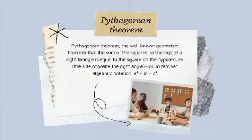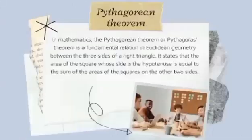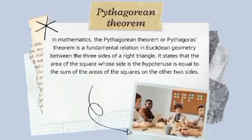What is the Pythagorean Theorem? The Pythagorean Theorem is the well-known geometric theorem that the sum of the squares on the legs of a right triangle is equal to the square on the hypotenuse — the side opposite the right angle — or in familiar algebraic notation: a squared plus b squared is equal to c squared, or c squared is equal to a squared plus b squared. In mathematics, the Pythagorean Theorem is a fundamental relation in Euclidean geometry between the three sides of a right triangle.